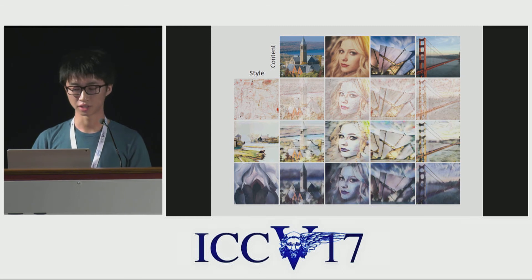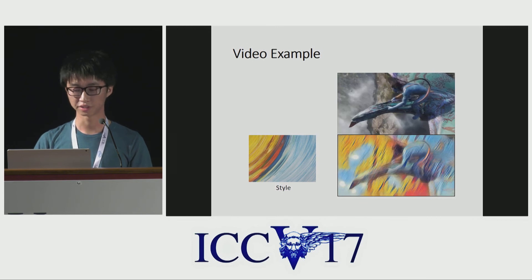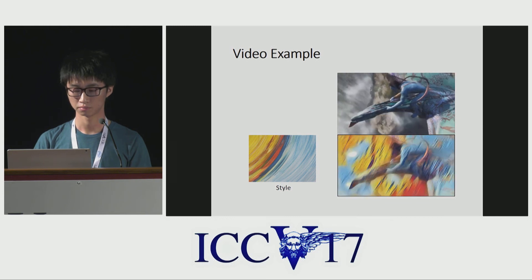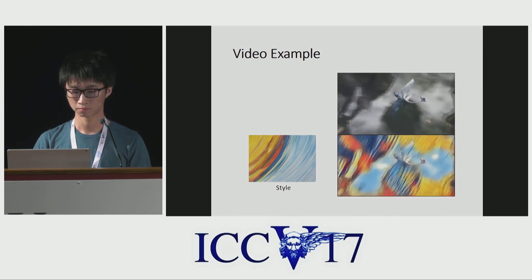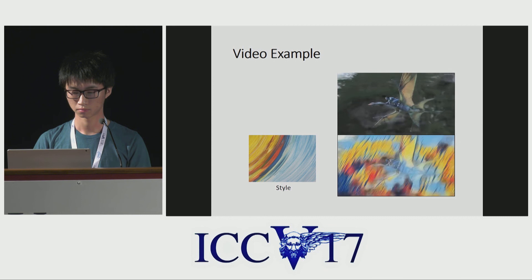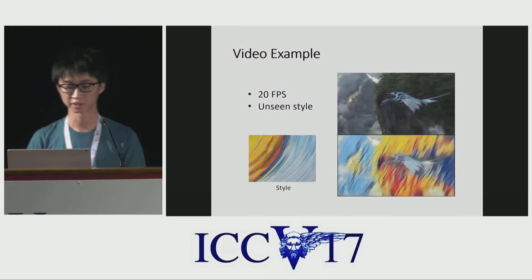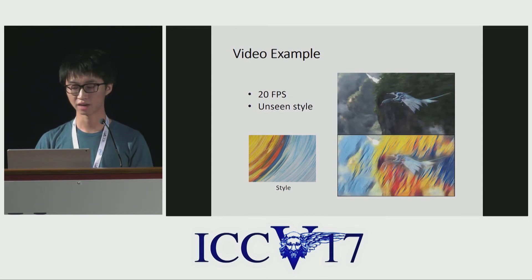Here we show some example results produced by our algorithm. Each column uses the same content image and each row shares the same style. As you can see, the images are of high quality, even though these styles were never observed by our network during training. We additionally show an example of our style transfer applied to video. The video is processed at 20 frames per second, and again, our network has never seen this style during training.